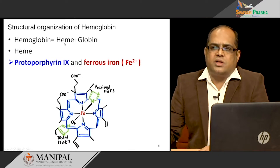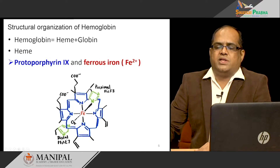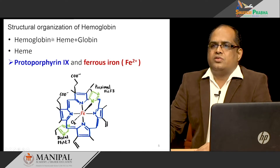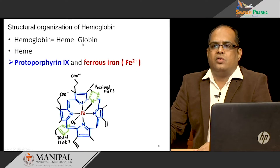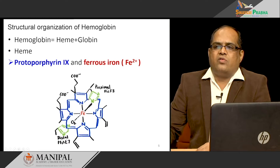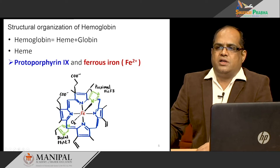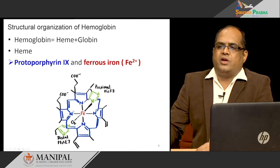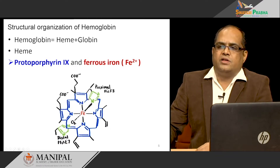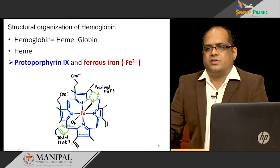Let us now look at how the structure of hemoglobin helps its function. Hemoglobin is a molecule present in red blood cells that helps in carrying oxygen. It is made up of two parts: heme and globin. Globin is the polypeptide chain made up of amino acids, and heme is a protoporphyrin ring with iron in the ferrous form at the center. The iron forms a coordinated complex with four nitrogen atoms of the protoporphyrin ring, two bonds with proximal histidine F8, and one bond attached to oxygen and then to distal histidine E7. This is the structure of the heme.